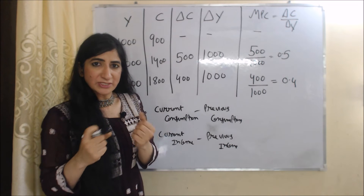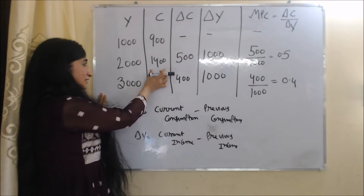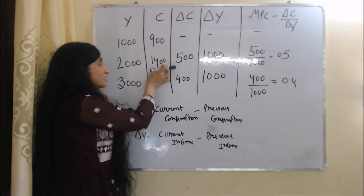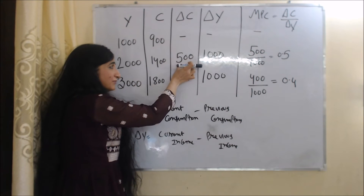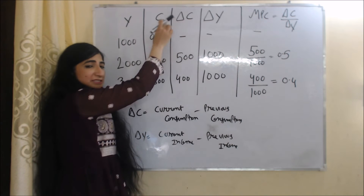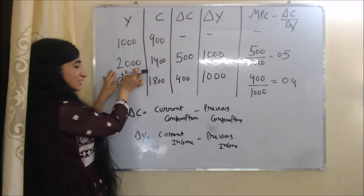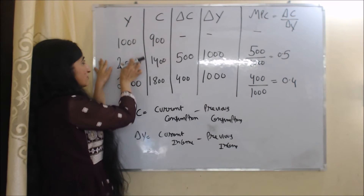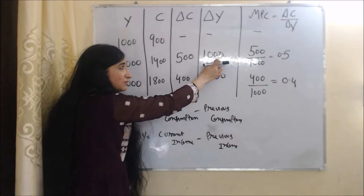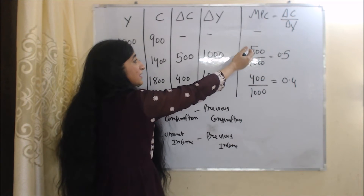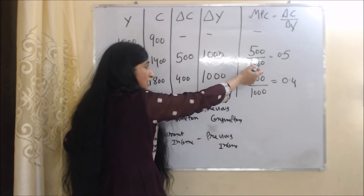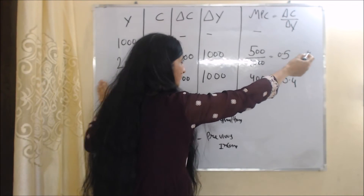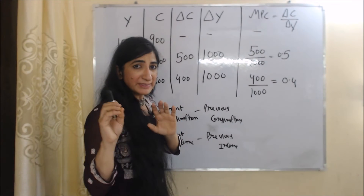Now we calculate change in consumption in the second case. Current consumption is 1,400 and previous consumption is 900, so 1,400 minus 900 equals 500. This 500 is the change in consumption. Change in income is current income 2,000 minus previous income 1,000, which equals 1,000. Putting this into the formula: 500 over 1,000 equals 0.5, so our MPC in the second case is 0.5.